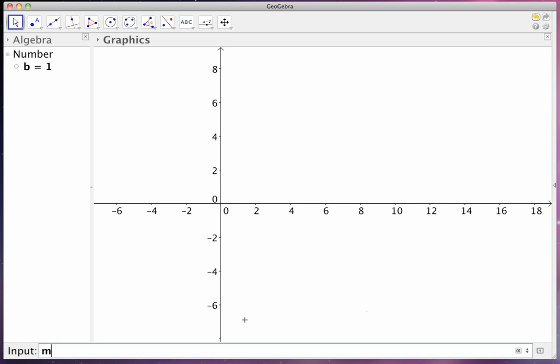Go back into the input field. Type in M equals 1. Enter on your keyboard. I'll discuss in a bit why I think it's best to use B equals 1 and then M equals 1. And then you type in Y equals MX plus B. And this is where the magic now begins to happen. You press Enter and voila, you have the line Y equals MX plus B.